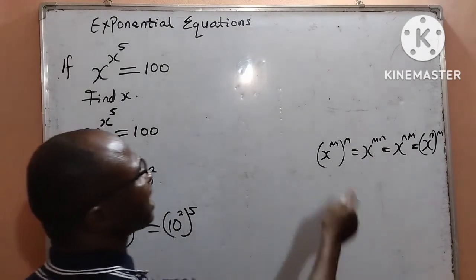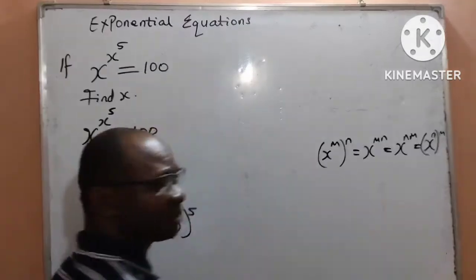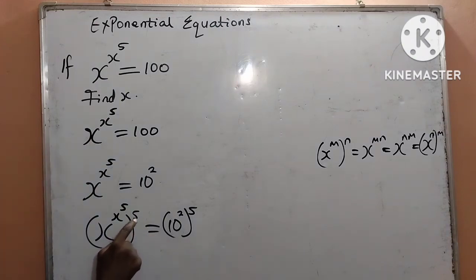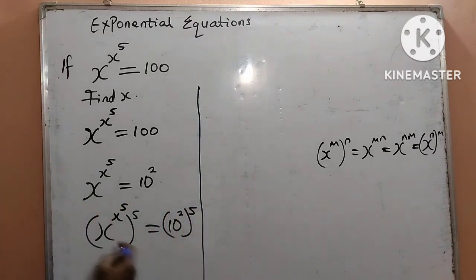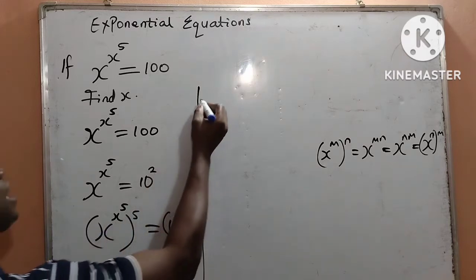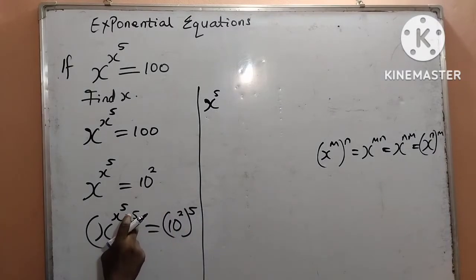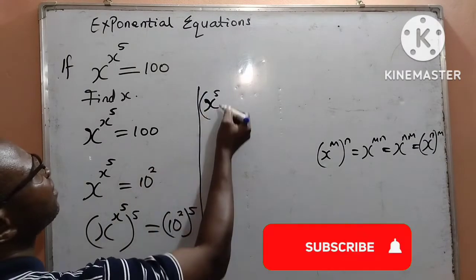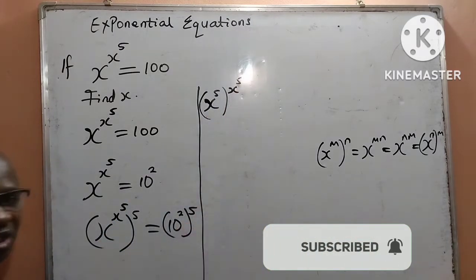Going by that, since I can interchange the powers, it implies that I can also interchange the powers here. I have the outside-bracket power of 5, and inside the bracket I have the power x to the power of 5. Therefore, I can now write by the left hand side — in exchanging the powers — I will have x to the power of 5 inside the bracket, and x to the power of 5 as the outer power as well.